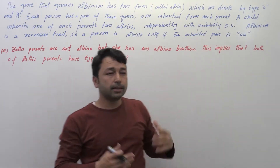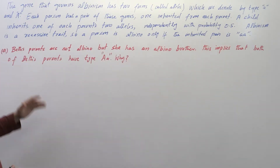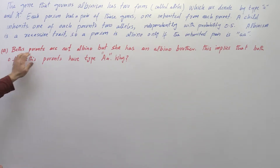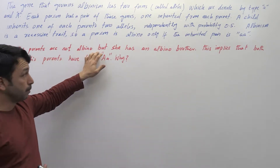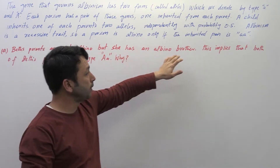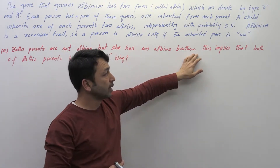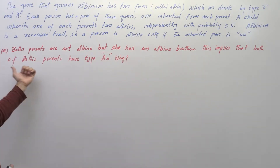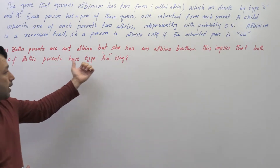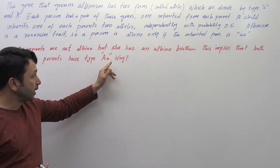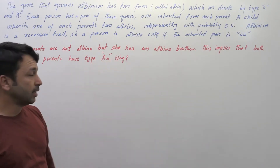Now let's come to the first part of the question, Part A, in which we have been given some information: Beth's parents are not albino, but she has an albino brother. This implies that both of Beth's parents have type capital 'A' and small 'a'.